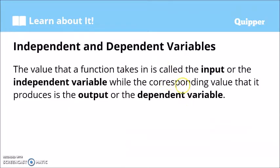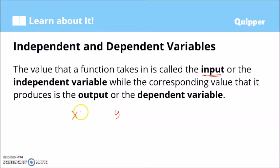We also have what we call independent and dependent variables. The value that a function takes in is called the input, or the independent variable. While the corresponding value that it produces is the output, or the dependent variable. So if we have x and y, the value we assign to x is the independent variable or input, and the value produced for y is the output or dependent variable.